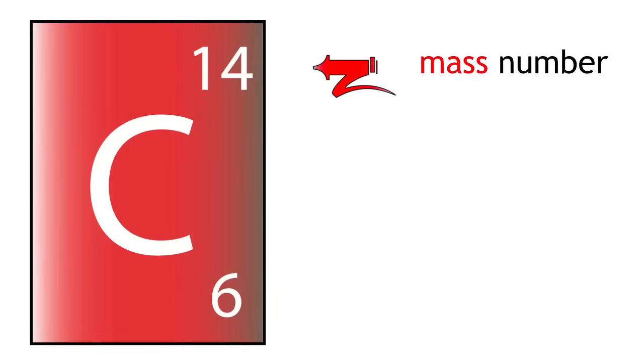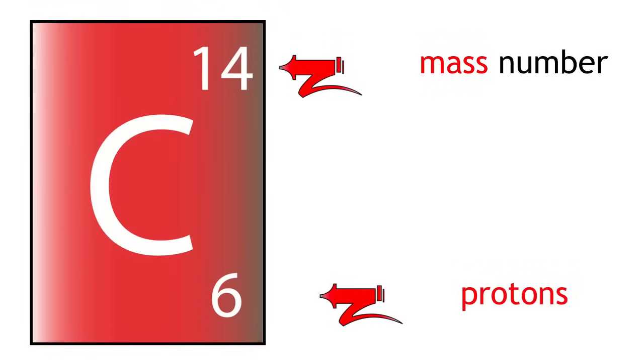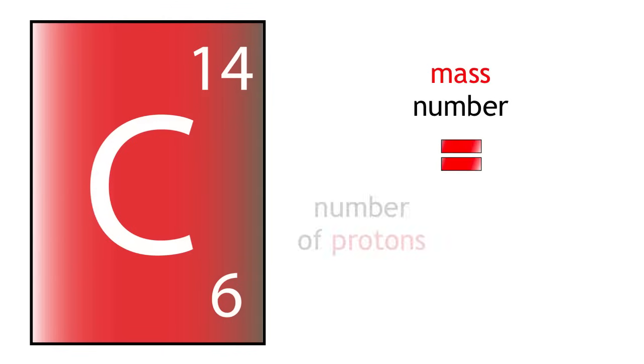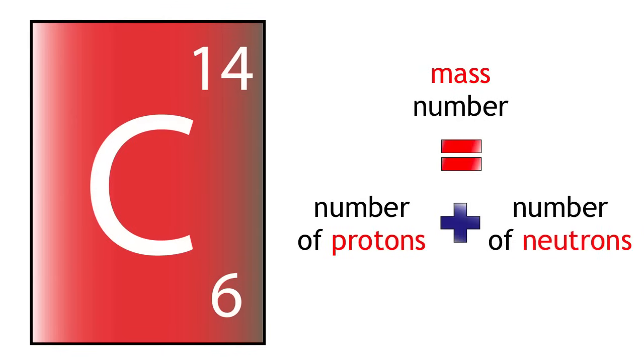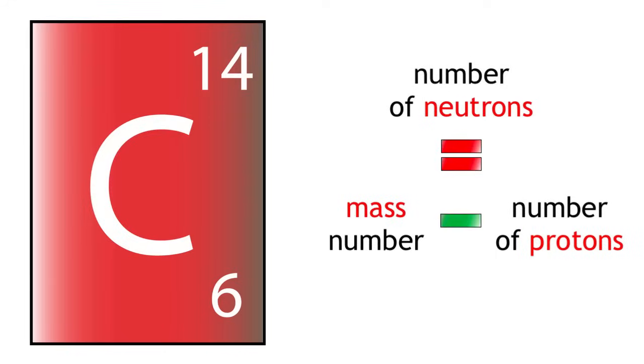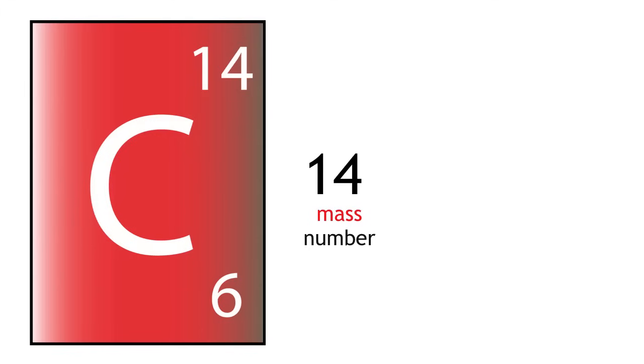Carbon-14 has a mass of 14 but it still only has 6 protons. Mass number equals protons plus neutrons. Rearranged, neutrons equals mass number minus protons. 14 minus 6 equals 8. Therefore, carbon-14 has 8 neutrons.